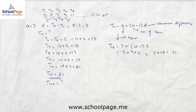Now if we have to find the 100th term, it will be a plus (n minus 1) times d, which is 3 plus (100 minus 1) times 2. That is 3 plus 99 into 2, which equals 201.